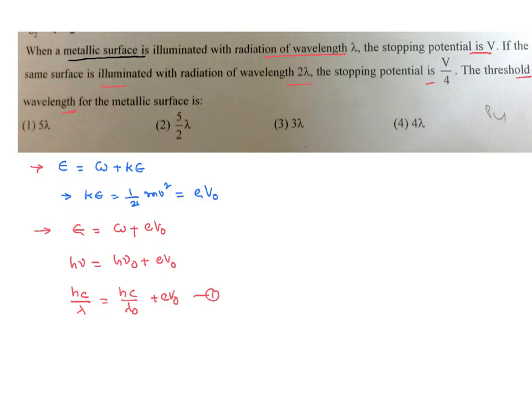Suppose the incident wavelength equal to 2 lambda as it is given in the problem. We can write a formula: hc by 2 lambda. The threshold wavelength is not going to change depending on the frequency of the incident light. And he said the stopping potential is different. In this case, its value equal to v₀ by 4. Let me call this as equation number 2.